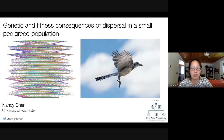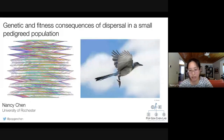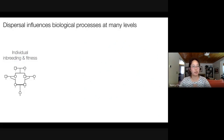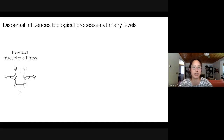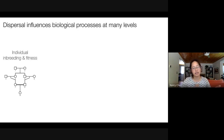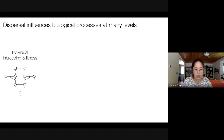I'll be discussing some of the work in my lab focused on understanding genetic and fitness consequences of dispersal. As many of you probably know, dispersal — the movement of individuals across the landscape — is really important in influencing biological processes at several different levels. For instance, individual dispersal patterns will have a large impact on levels of inbreeding for different individuals, which may have fitness outcomes for individuals and for populations as a whole.